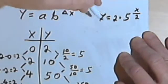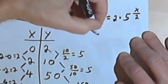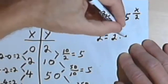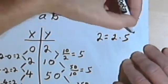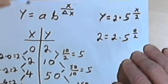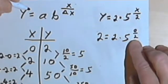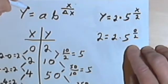When y is 2, I'm going to have 2 times 5 raised to the 0 over 2. Well, 0 over 2 is 0. 5 to the 0 power is 1. So I'm going to have 2 times 1. And 2 times 1 is 2. So 2 equals 2.